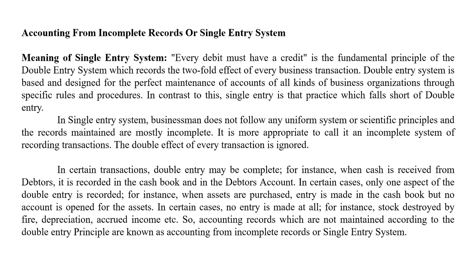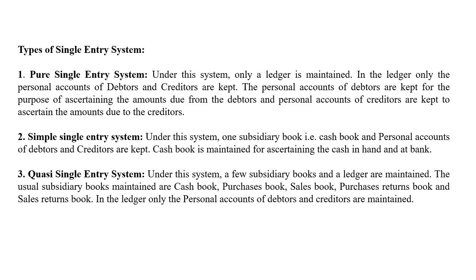So now moving on to the types of Single Entry System. There are three types: the pure single entry system, the simple single entry system, and the quasi single entry system. Under the pure single entry system, only a ledger is maintained, and in the ledger only the personal accounts of debtors and creditors are kept.